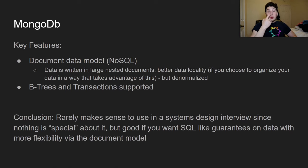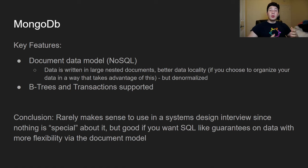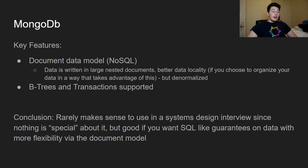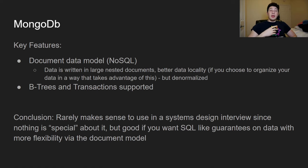The first NoSQL database is MongoDB, which is a document database. Instead of storing data in rows, you have documents — basically lists of items — and within a document you can have more nested documents, allowing you to store a ton of data in collections.